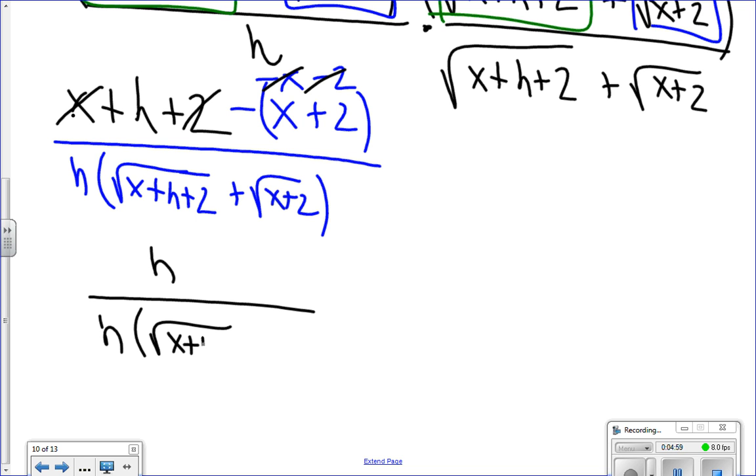We're left with h over h times the square root of x plus h plus 2 plus the square root of x plus 2. And now if the h is canceled, I'll have 1 over the square root of x plus h plus 2 plus the square root of x plus 2.